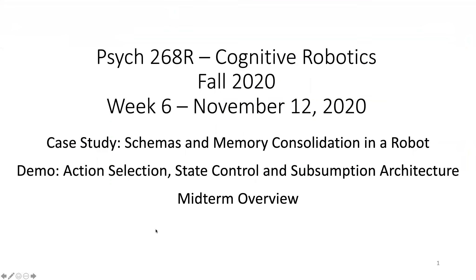I'm going to cover a bunch of things today. First I'm going to do a case study which looks at schemas and memory consolidation. I'll first talk about the model and the inspiration for the model from neuroscience, and then go into the robot experiments. Then I'll give a WeBots demo on action selection using something like subsumption architecture, but a nice design method for designing behaviors that have multiple actions.